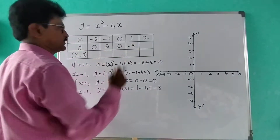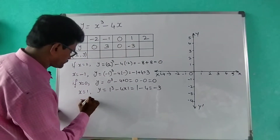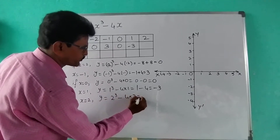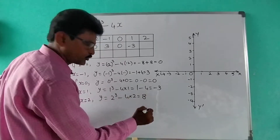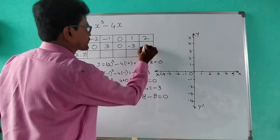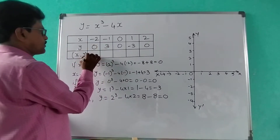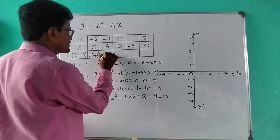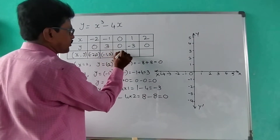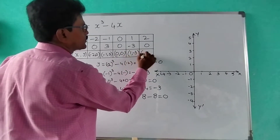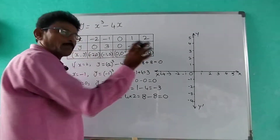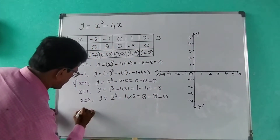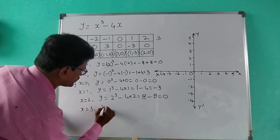For x = 1, y = 1³ - 4(1) = 1 - 4 = -3. For x = 2, y = 2³ - 4(2) = 8 - 8 = 0. So the coordinate pairs are: (-2, 0), (-1, 3), (0, 0), (1, -3), (2, 0). These pairs are enough for plotting.